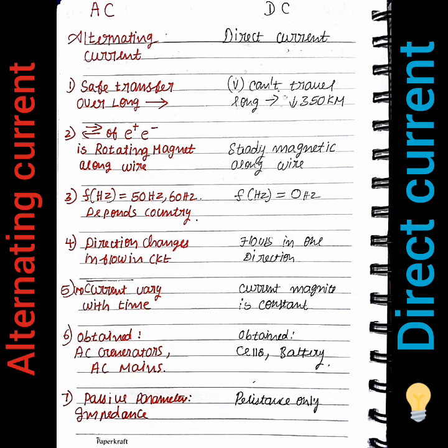In this video, we will talk about AC current versus DC current. AC is alternating current; DC is direct current. First, we will talk about AC and how it can transmit over long distances with reduced losses and safely.